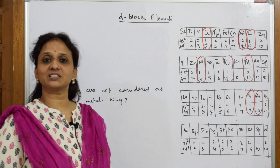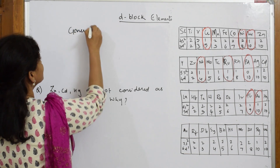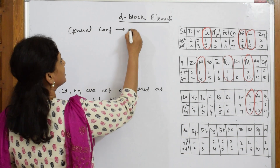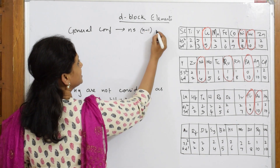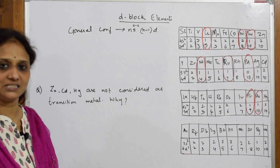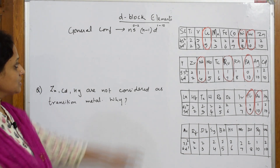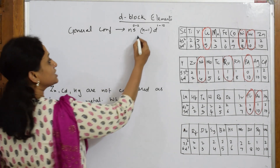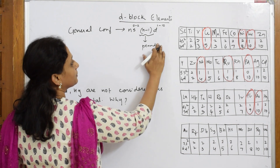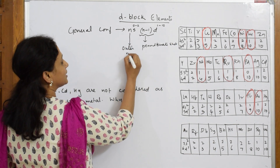For D block elements, or when we speak about transition elements, the general configuration is written using the principal quantum number as NS — where S goes from 0 to 2 — and N-1 D, where N-1 D goes from 1 to 10 electrons of the D shell. Here N-1 is called the penultimate shell, and NS (0 to 2) is the outermost shell.